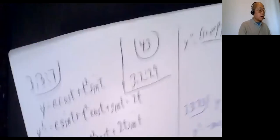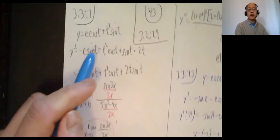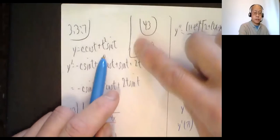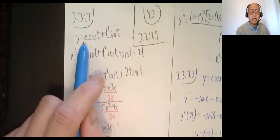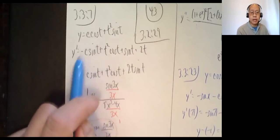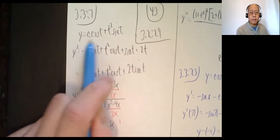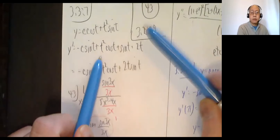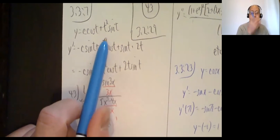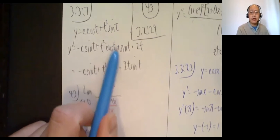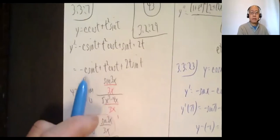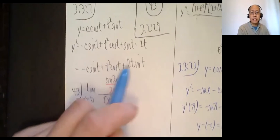All right, let me do 3.3 number seven. There's a C there — C is to be treated as a constant, pretend it's a number. C·cosine(t) + t²·sine(t). So the derivative of C·cosine(t) is negative C·sine(t) — derivative of cosine is negative sine, you just keep the constant and multiply by the derivative of cosine. Then plus the derivative of t²·sin(t) — that looks like a product rule. First function t² times the derivative of the second: derivative of sine(t) is cosine(t), plus the second function sine(t) times the derivative of the first, derivative of t² is 2t. Cleanup: negative C·sine(t) + t²·cosine(t) + 2t·sine(t).